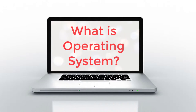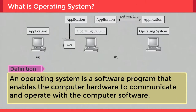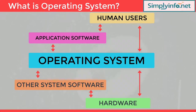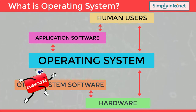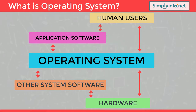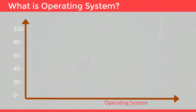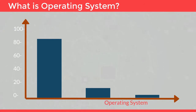An operating system is a software program that enables the computer hardware to communicate and operate with the computer software. For hardware functions such as input and output and memory allocation, the computer system acts as an intermediary between programs and the computer hardware. The dominant desktop operating system is Microsoft Windows.